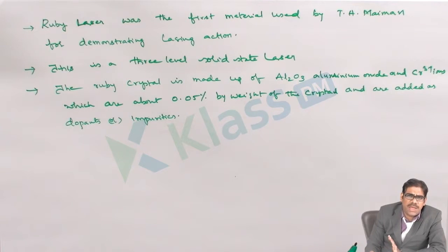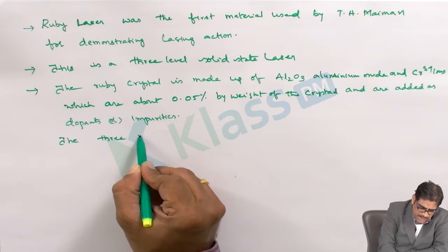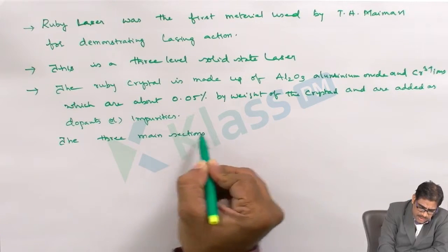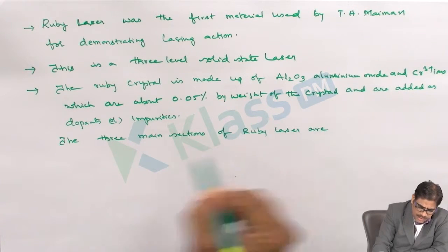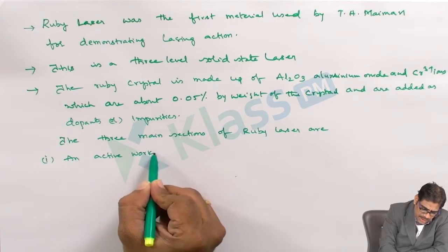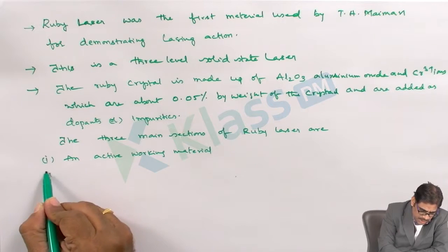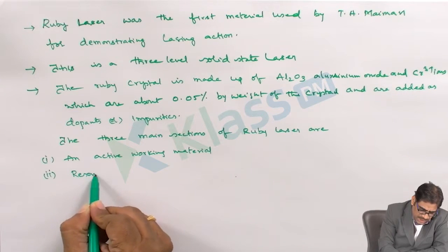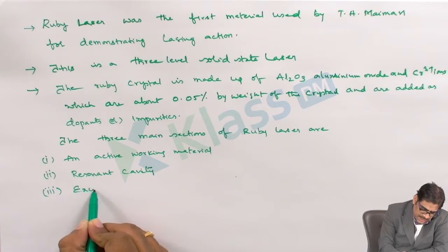There are three main sections involved in the construction of the solid state laser, that is the Ruby laser. The three main sections of the Ruby laser are: one, an active working material; number two, resonant cavity; number three, the exciting system.